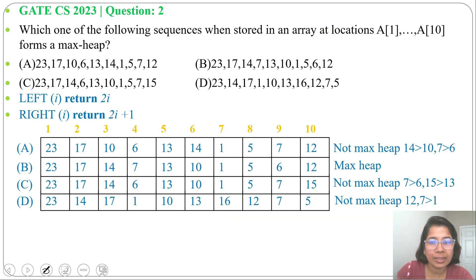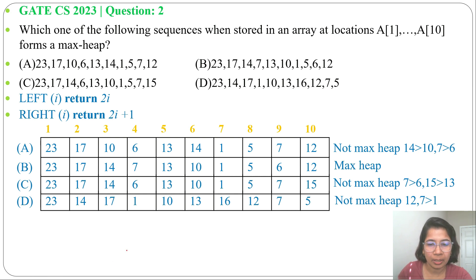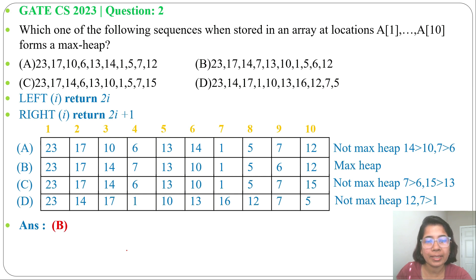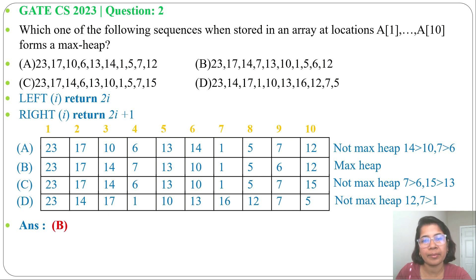From the array itself, you can check whether it's a max-heap: for index i, its left child is at index 2i and right child is at index 2i+1. The answer is option B — option B is a max-heap, whereas options A, C, and D are not, as they don't satisfy the parental dominance property where the parent value must be greater than its children. Please like, share, and subscribe if this was helpful. Thank you.